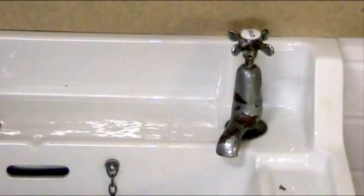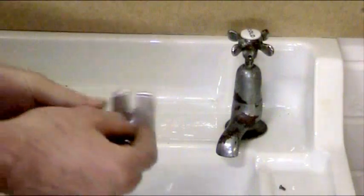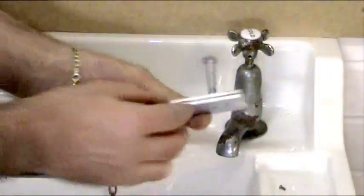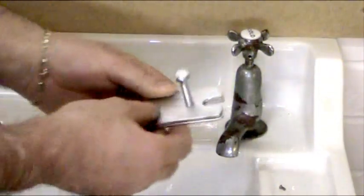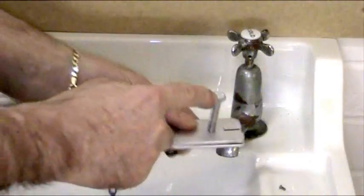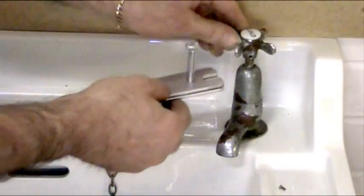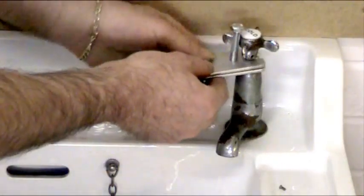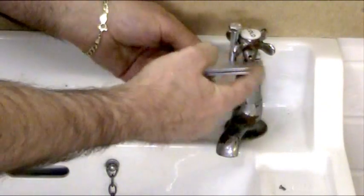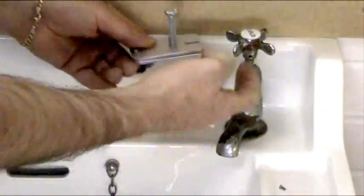So what we're going to use now is a tap handle pusher, which is this device here. Now what this does is it's made out of two plates with an operating bolt in the middle. And what you do is you simply place it in between the top of the tap bonnet and the underneath of the handle.